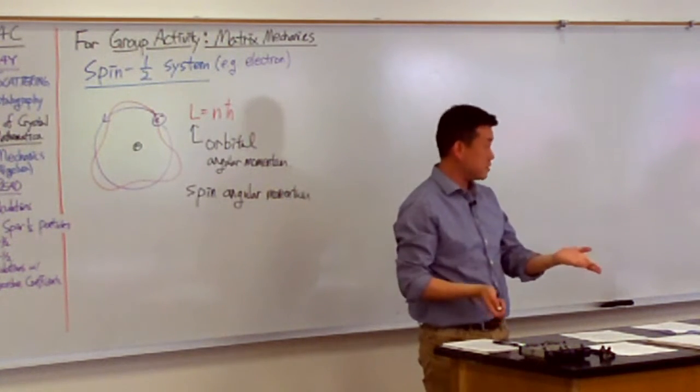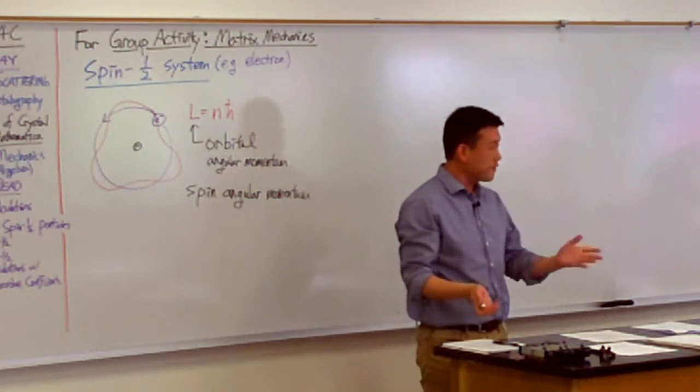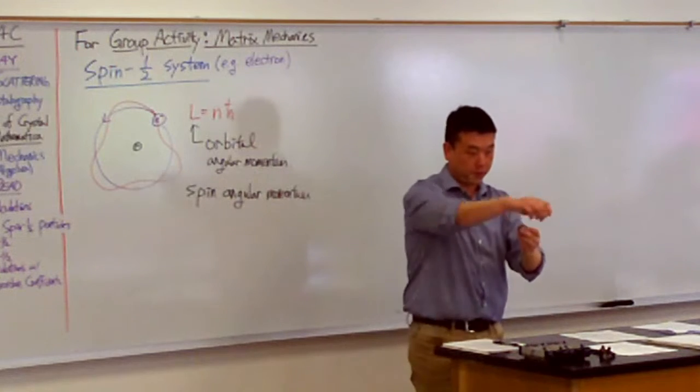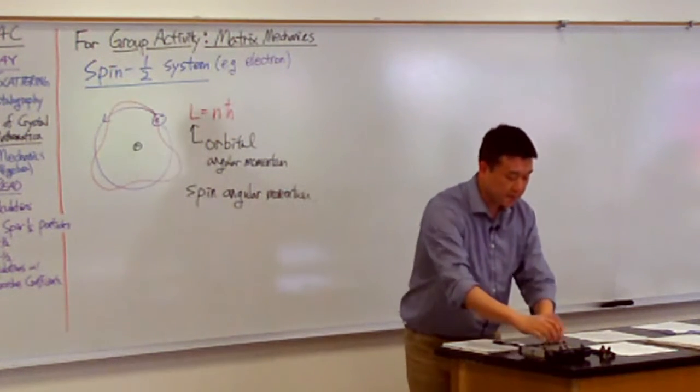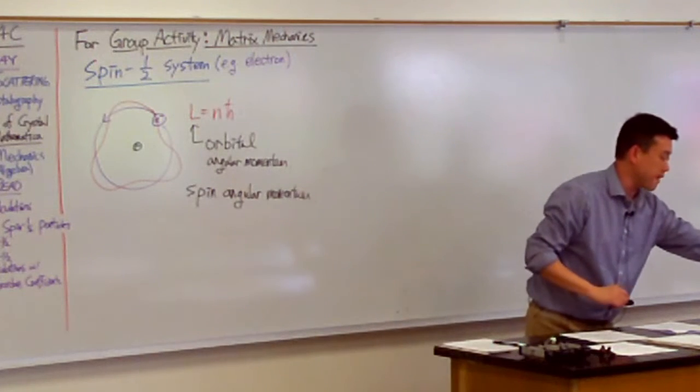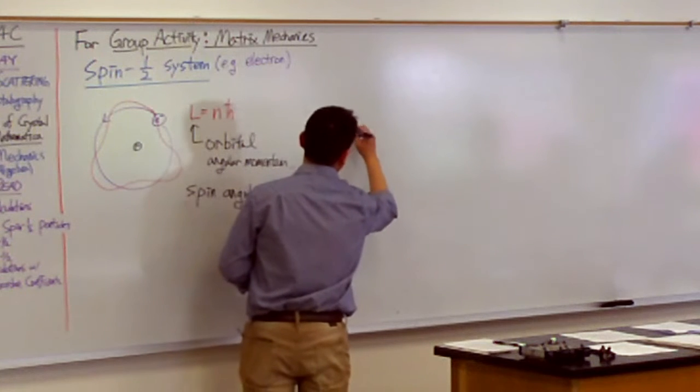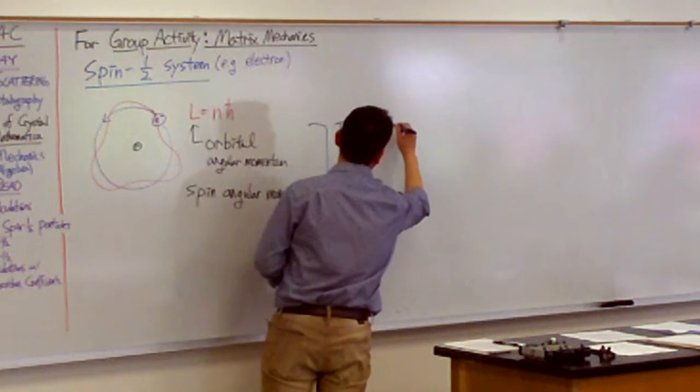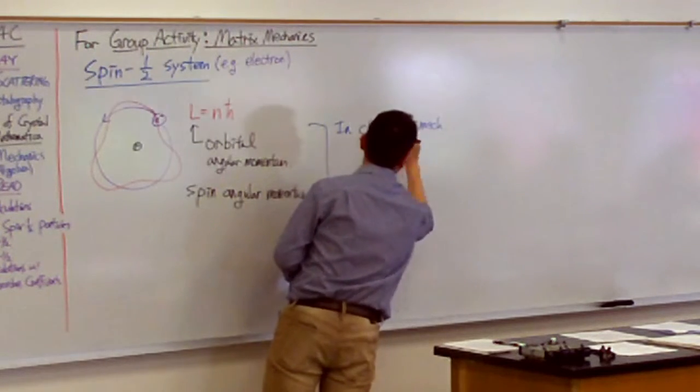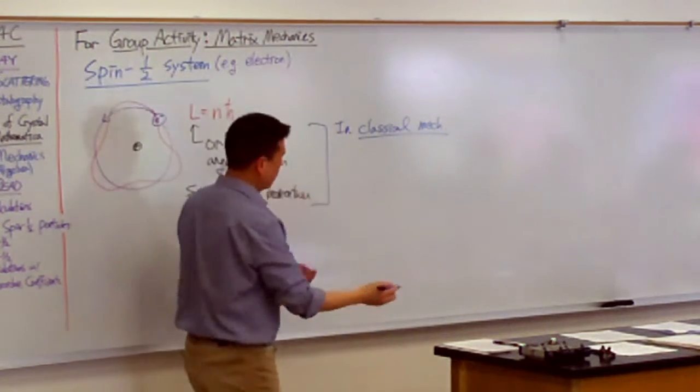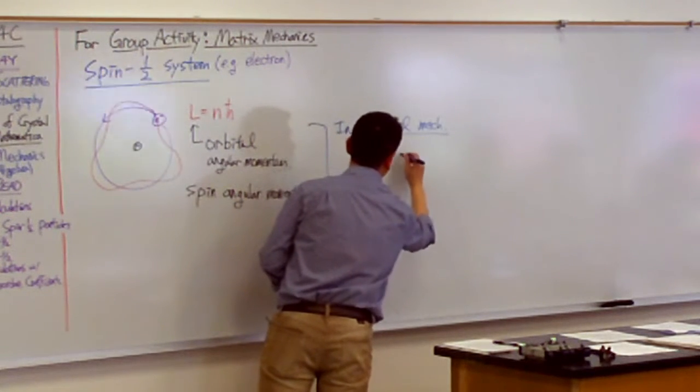But in classical mechanics, there's no fundamental difference between orbital and spin angular momentum. In classical mechanics, they are both described by the same general relationship. Because in classical mechanics, they are both described by angular momentum is equal to r cross p.